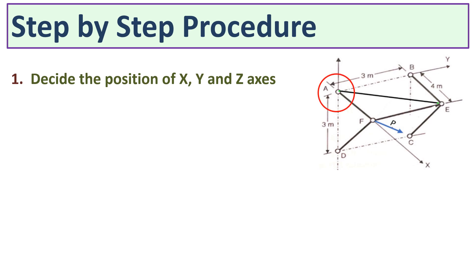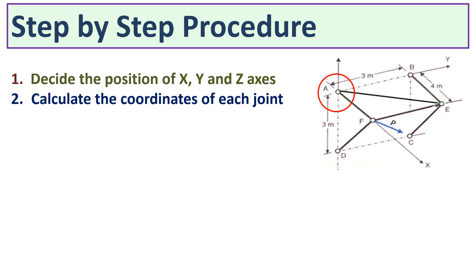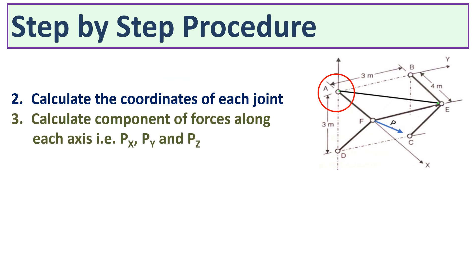In this case, you can see that A is the origin — that is, all axes X, Y, and Z are meeting at point A. The second step is to calculate the coordinates of each joint. In this frame there are six joints: A, B, C, D, E, and F, so we have to calculate the coordinate of each joint.